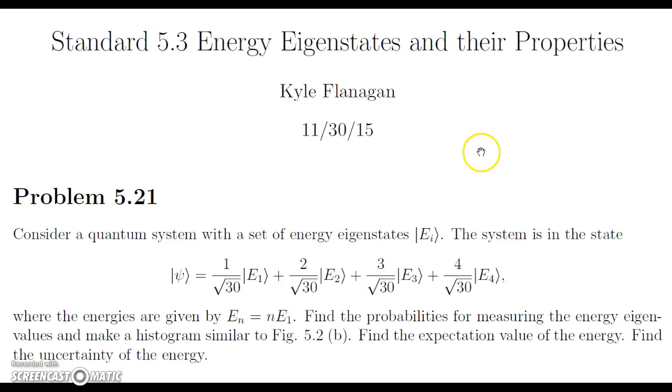The problem states: consider a quantum system with a set of energy eigenstates E sub i. The system is in the state psi equal to 1 over root 30 times E1 plus 2 over root 30 times E2 plus 3 over root 30 times E3 plus 4 over root 30 times E4.